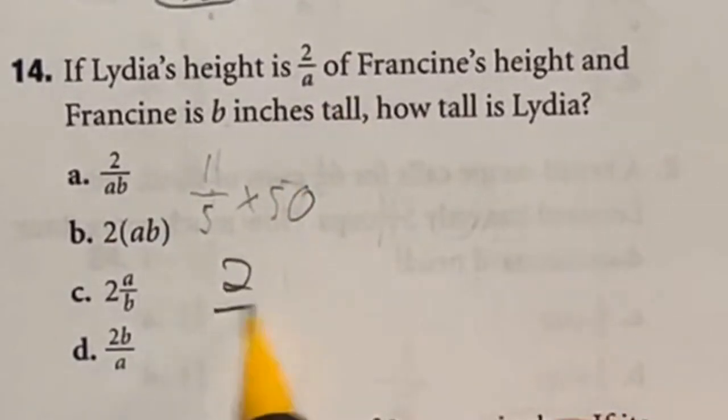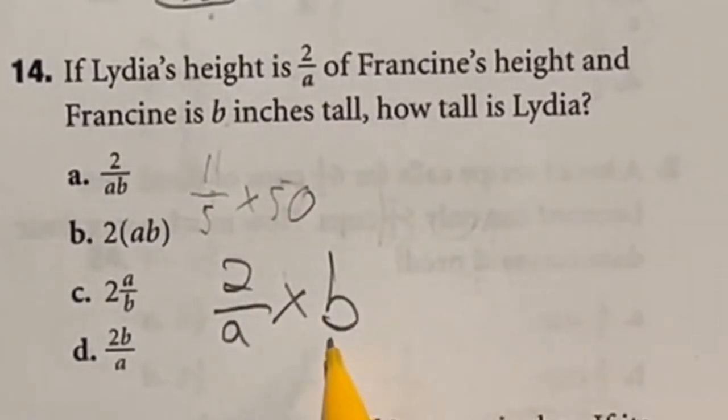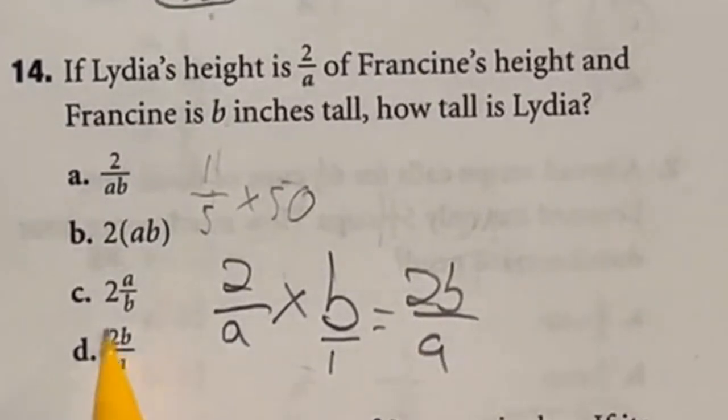I'm going to do two over a times the height of b. Well if you're multiplying here technically this becomes b over one so we can multiply straight across giving me 2b over a which is answer D.